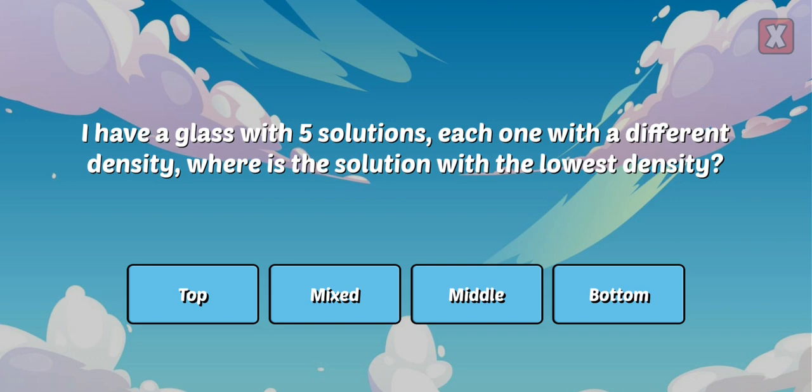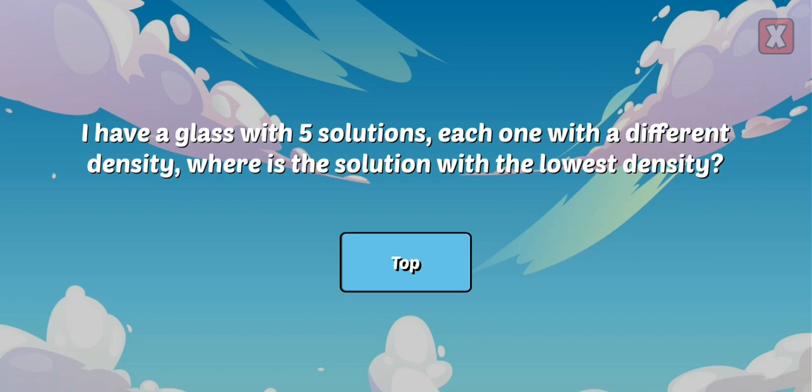I have a glass with five solutions, each one with a different density. Where is the solution with the lowest density? The solution with the lowest density weighs the least, so it floats to the top.